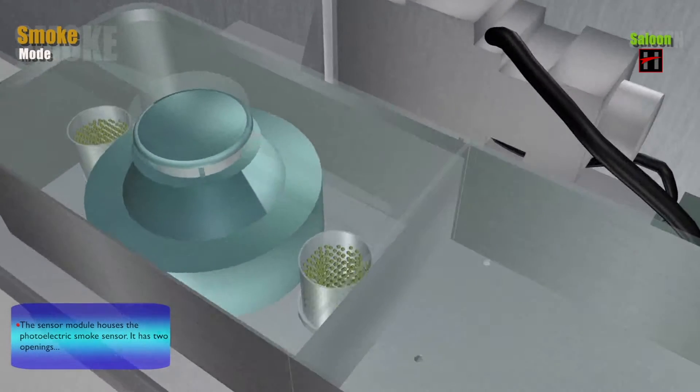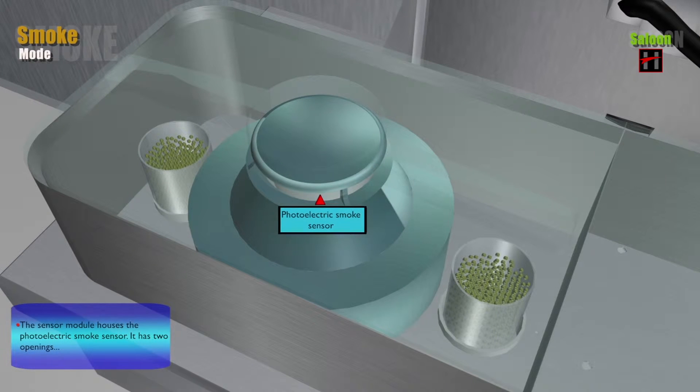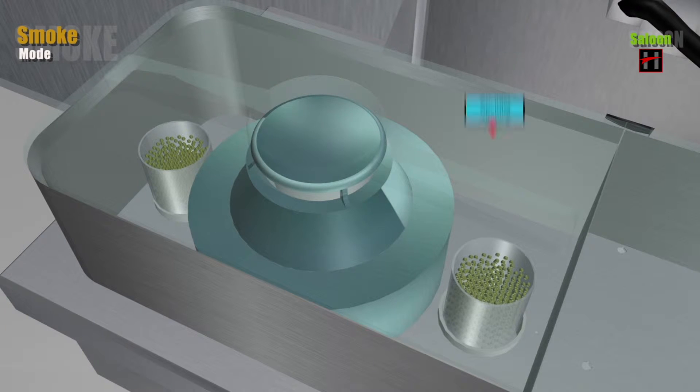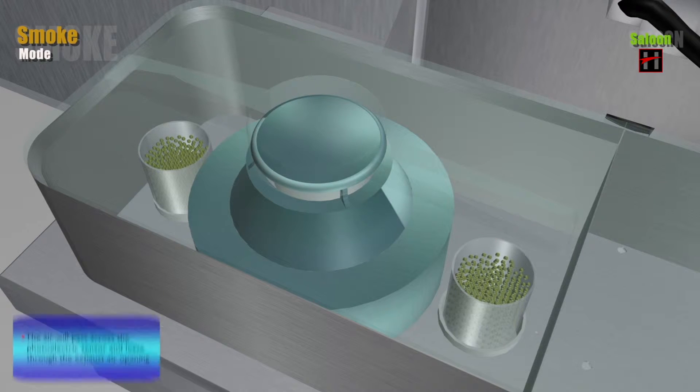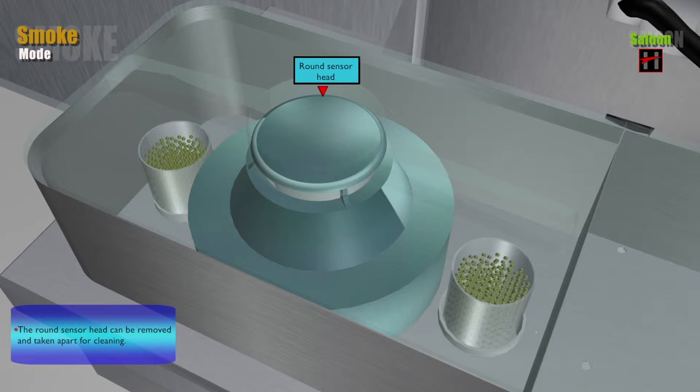The sensor module houses the photoelectric smoke sensor. It has two openings: the air inlet opening and the exhaust air opening. The air inlet opening is weather protected against the ingress of rainwater or washing fluid. The air will pass across the photoelectric sensor and leave through the exhaust air opening. The round sensor head can be removed and taken apart for cleaning.